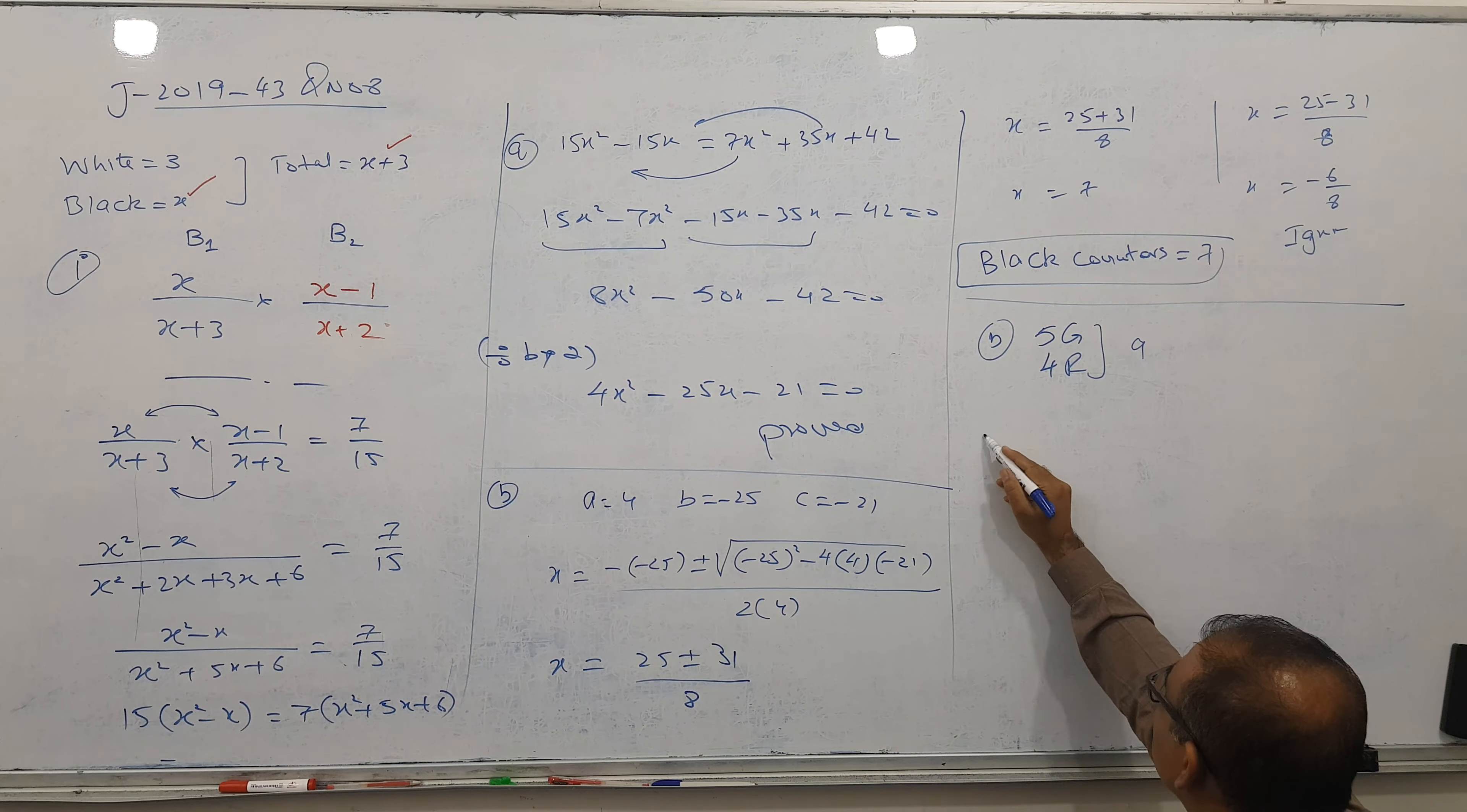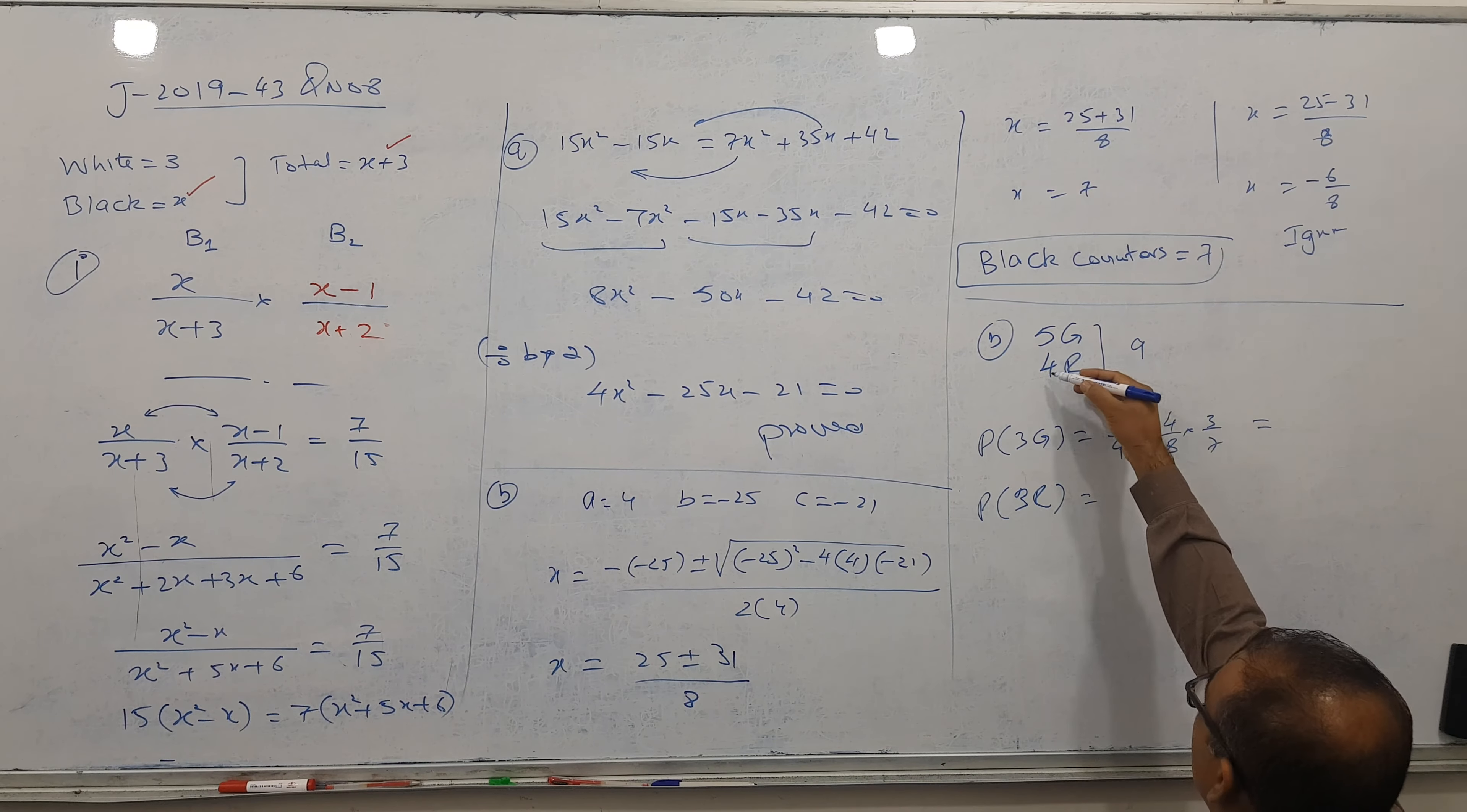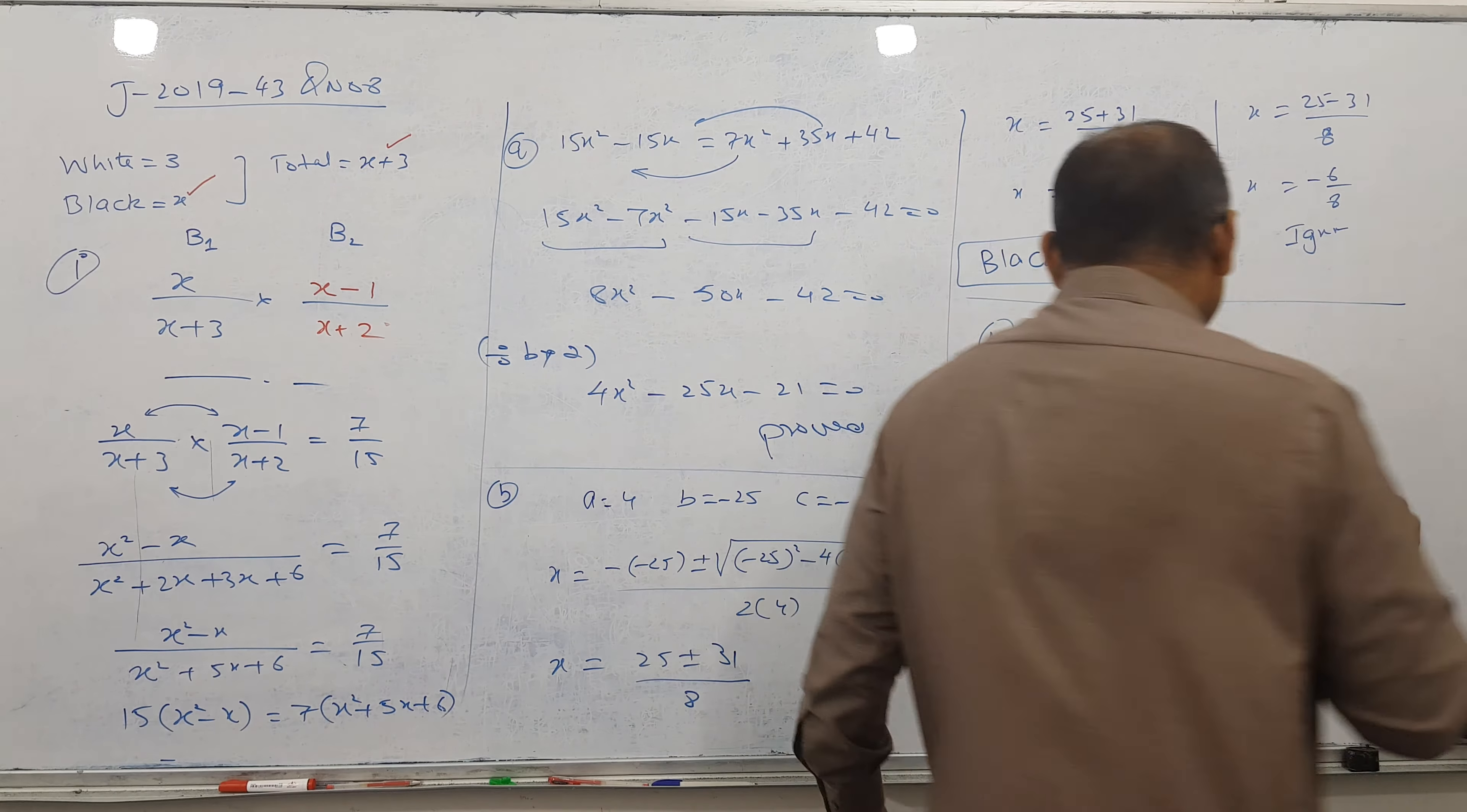For all 3 greens: first green is 5 by 9, one removed so 4 by 8, one more removed so 3 by 7. This gives the probability for 3 greens. For 3 reds: first red is 4 by 9, second red is 3 by 8, third red is 2 by 7. For the probability that 3 counters are all the same color, I will add both answers.